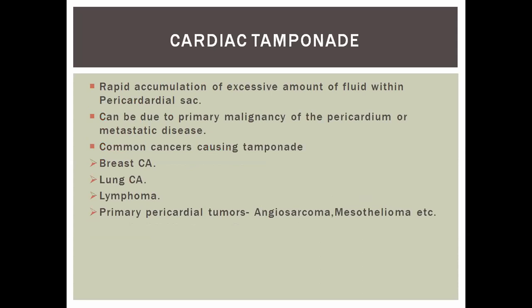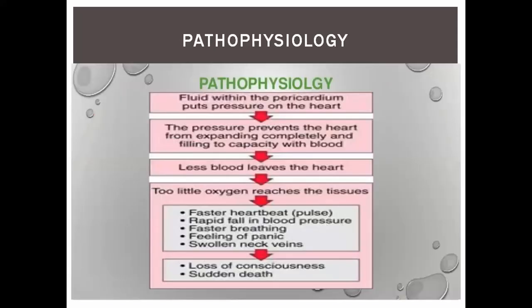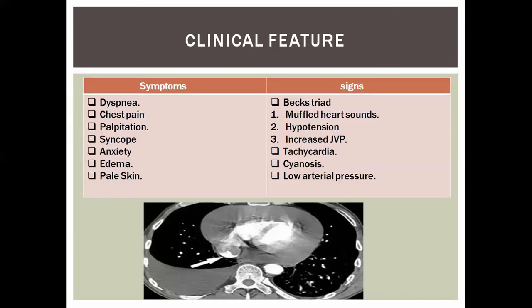Moving to cardiac tamponade — a dreaded oncological emergency. Malignancy can cause three pericardial diseases: pericardial effusion, constrictive pericardial disease, and cardiac tamponade, with tamponade being most dreaded. Rapid accumulation of excessive fluid within the pericardial sac can be due to primary cardiac cancer or metastatic disease. Common causes include lung cancer, lymphoma, and primary pericardial tumors, though mostly it's metastatic. Pathophysiology: rapid fluid accumulation impairs cardiac filling, leading to fall in cardiac output and stroke volume, causing anoxia, poor tissue perfusion, and syncopal symptoms. Chest pain, palpitation, and syncope can all be explained by this mechanism.